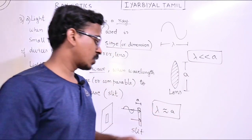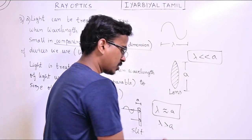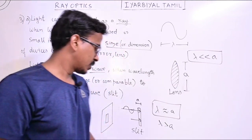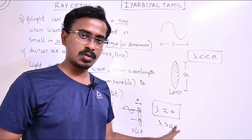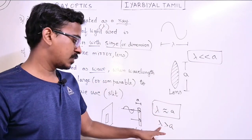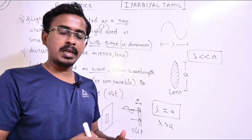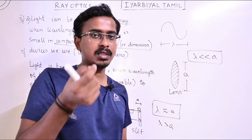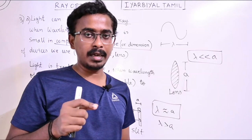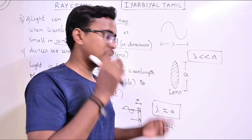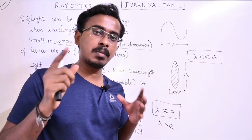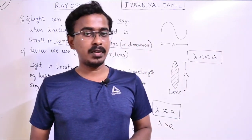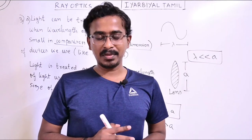However, when the wavelength is large or comparable to the size of the device we use — for example, a slit — then we treat light as a wave and apply Wave Optics. The wavelength of visible light is in nanometers, and if the device size is comparable to that, we use wave optics. This is the introduction to Ray Optics. In the next video, we will cover Plane Mirror. Bye from Nagarajan, all the best.